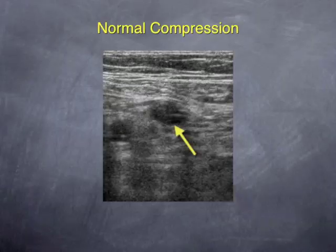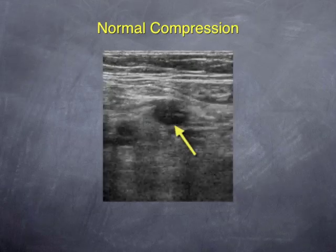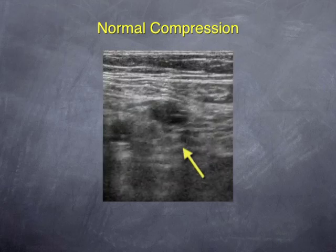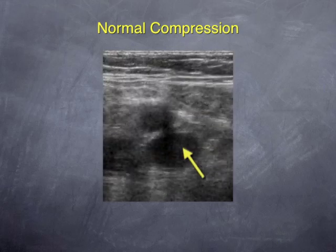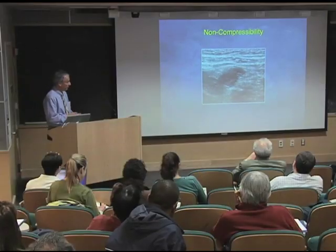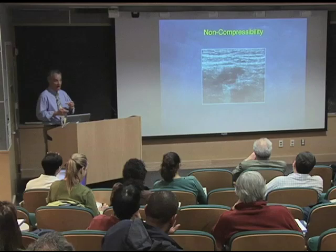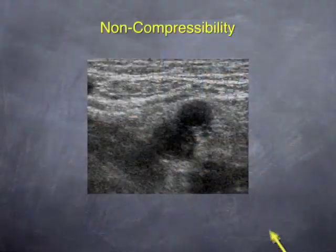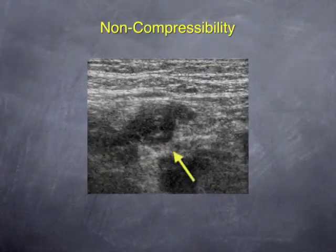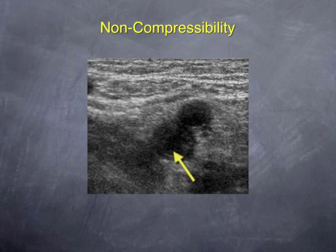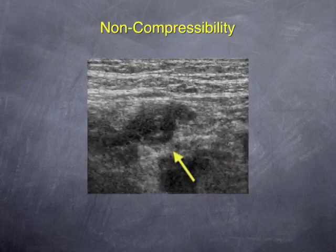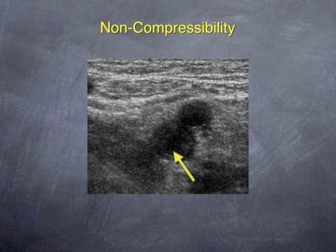This is the artery and we're pressing down, and you can see that vein compresses quite nicely — no evidence of clot within that vein at all. And here's an example of a patient that has a big clot in that vein. This is the artery and there's the vein. Instead of it squishing down to nothing, it stays the same, telling us that there's clot within that vessel.